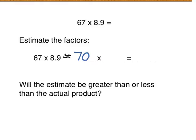So round our 8.9 and round it up to 9 which is going to give us an estimate of 630. So thinking about our estimate, we want to see if this estimate is going to be greater than or less than the actual product. And since we rounded both of our factors up, our estimate is going to be greater than our actual product.